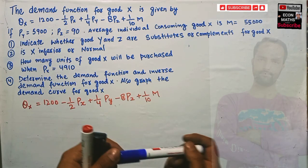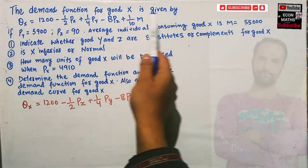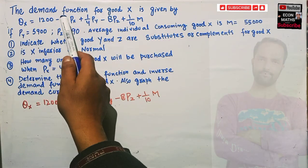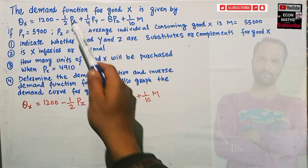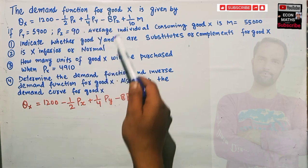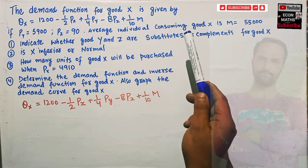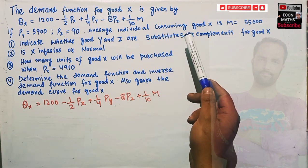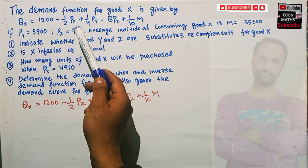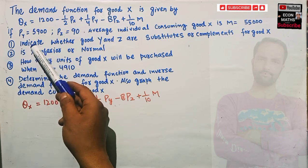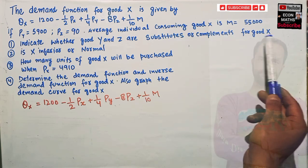In this video, we will try to solve a problem asked by Ikram John. The demand function for good X is given as QX = 1200 - 1/2 PX + 1/4 PY - 8PZ + 1/10 M, where PX is price of good X, PY is price of good Y, PZ is price of good Z, and M is the average individual income of the consumer. Given price of good Y is $5,900 and price of good Z is 90, we have to find whether goods Y and Z are substitutes or complements for good X.